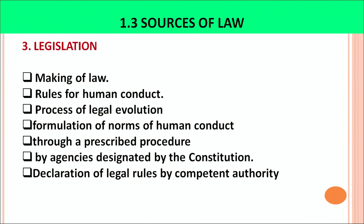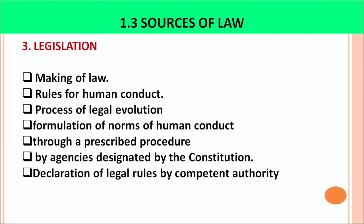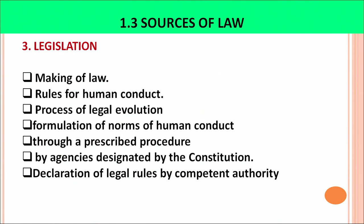The third source of law is legislation — the making of rules for human conduct. There is a process of legal evolution for a legislation. Through legislation we formulate the norms of human conduct: what is expected from a person and how they should behave in society. For making legislation, prescribed procedures must be followed. Various agencies designated by the Constitution, through a prescribed machinery and procedure, make the legislation. Legislation is essentially the declaration of legal rules by a competent authority.